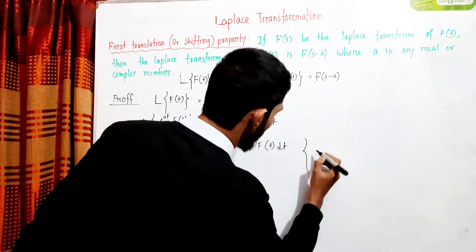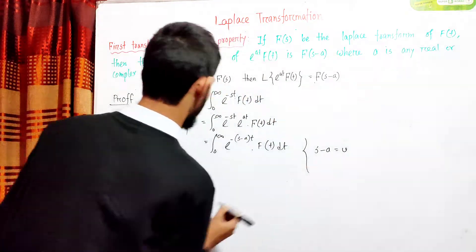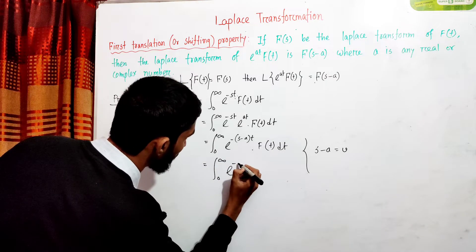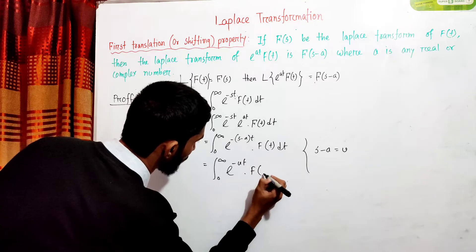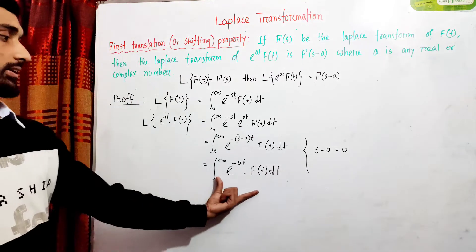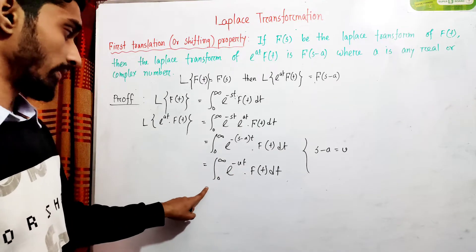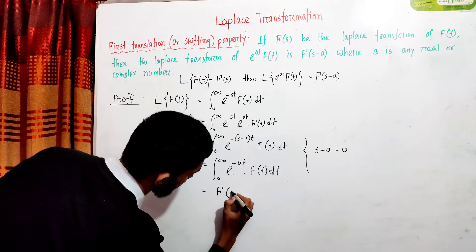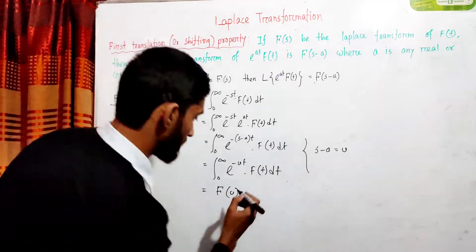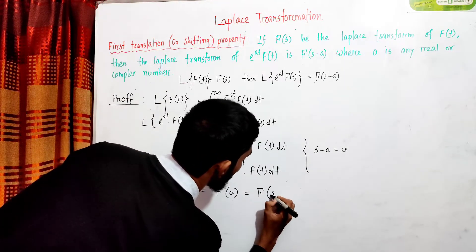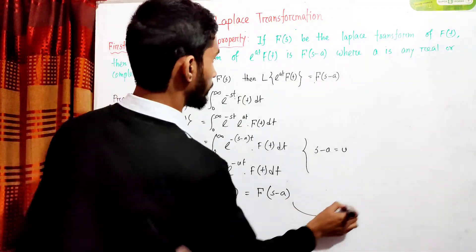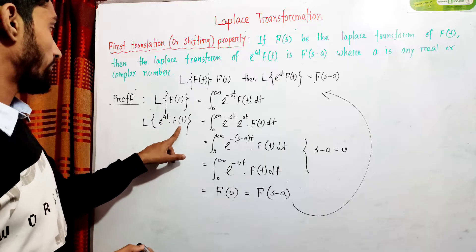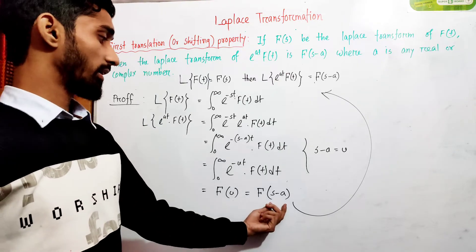We let u equal s minus A. So we have the integral from 0 to infinity of e^(minus u·t) times f(t) dt. This is the Laplace transform evaluated at u, which equals F(u) = F(s minus A). Therefore, the Laplace transform of e^(At)·f(t) equals F(s minus A).